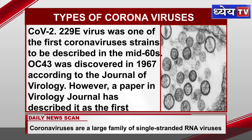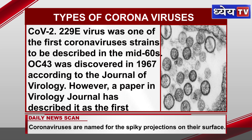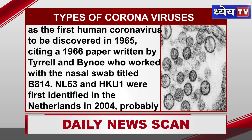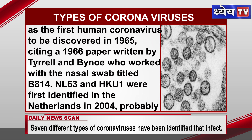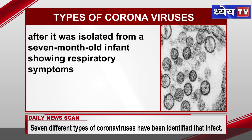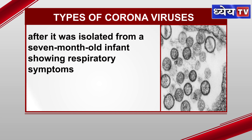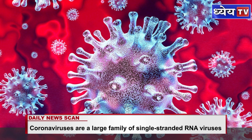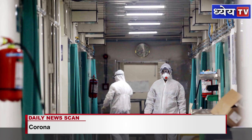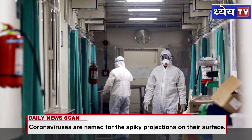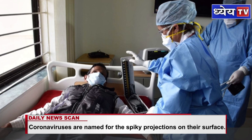The 229E virus was one of the first coronavirus strains to be described in the mid-1960s. OC43 was discovered in the year 1967, according to the Journal of Virology. NL63 was first identified in the Netherlands in 2004, probably after it was isolated from a 7-month-old infant showing respiratory symptoms. During this time, there was an increase in research on human coronaviruses, leading to the discovery of HKU1 in Hong Kong in early 2005. SARS-CoV was discovered in 2003 in China, MERS in 2012 in Saudi Arabia, and SARS-CoV-2 in 2019 in Wuhan, China.